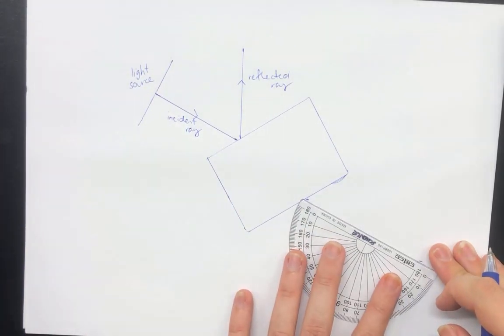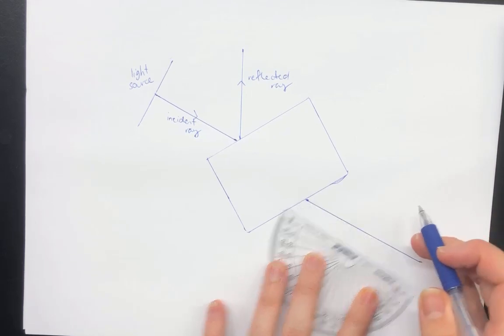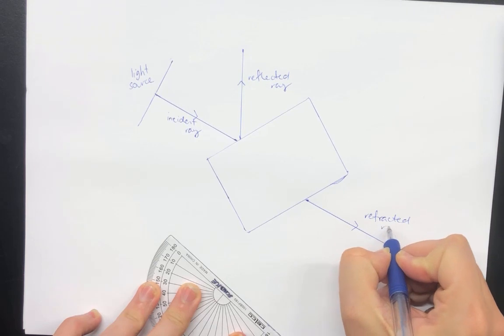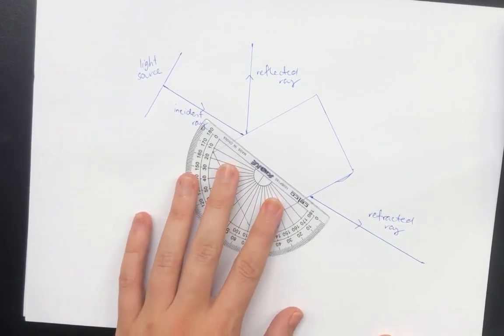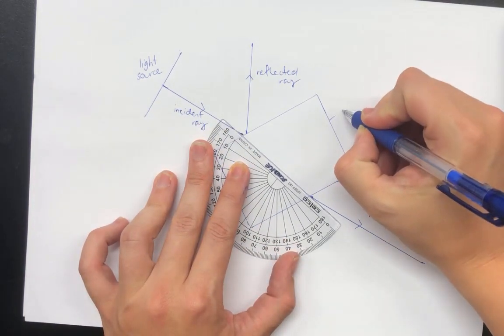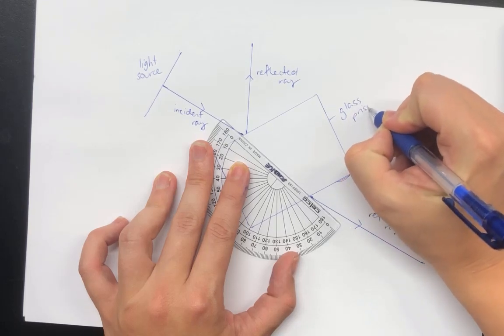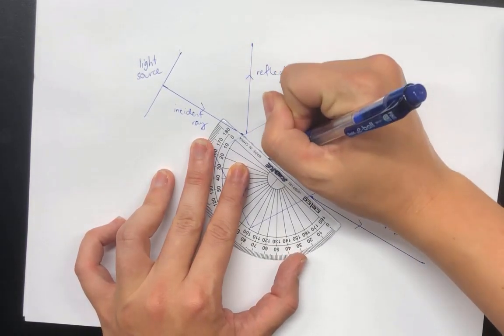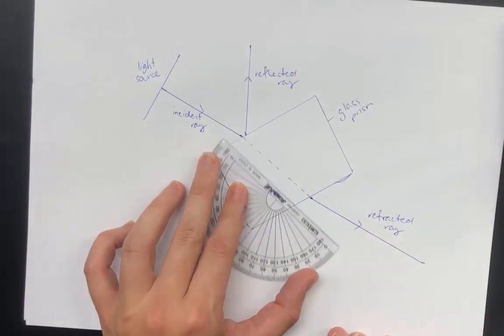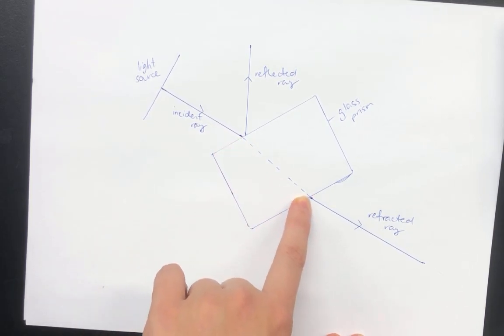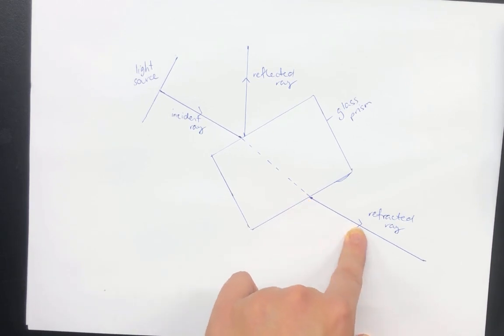And then this was our reflected ray. And here is our refracted ray. Now between the incident ray where it hits the glass prism, and we can label this as our glass prism, to where it matches up with the refracted ray, we're going to put a little dotted line through. This helps us to see that it's not passing through as a straight line. There is actually a bend here at this point. And again, when the light leaves the glass, it bends in another direction.